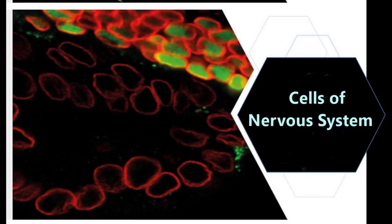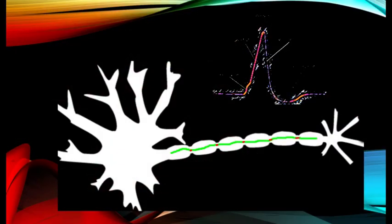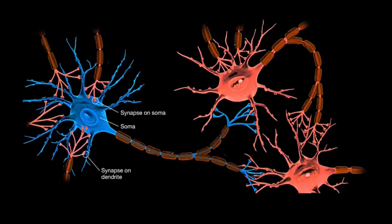Hello guys, I hope you found the previous lecture helpful. In our previous lecture we discussed various cells found in the nervous system, and today we will discuss the action potential. As you know, the neurons receive information from the terminal buttons of axons of other neurons, or its own terminal buttons, and send it to the cell body.